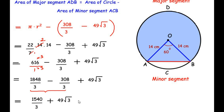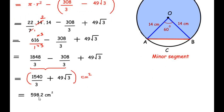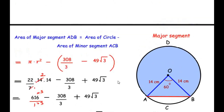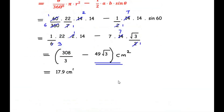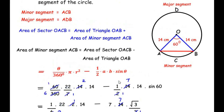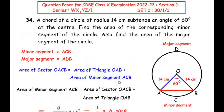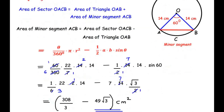The area of the major segment is 1540/3 + 49√3 centimeters square. In decimal form this is approximately 598.2 centimeters square. I hope you have understood all the steps. If you know any other way of solving this example, do comment below. If you are liking my videos, please like, share, and subscribe to my channel. Thank you for watching.